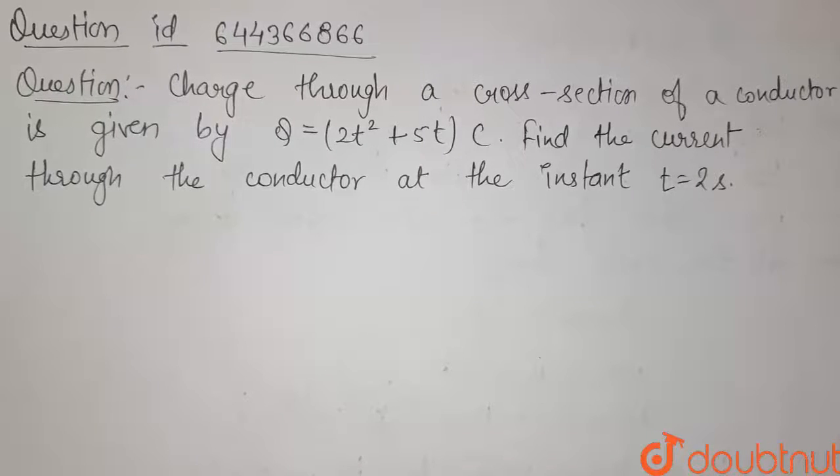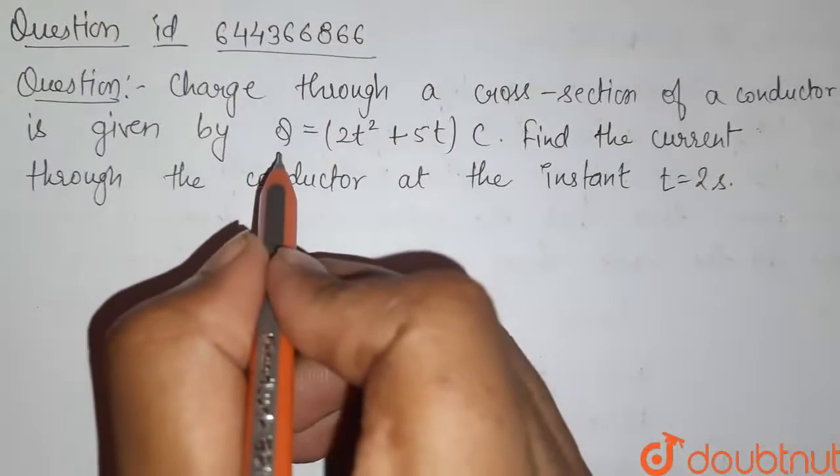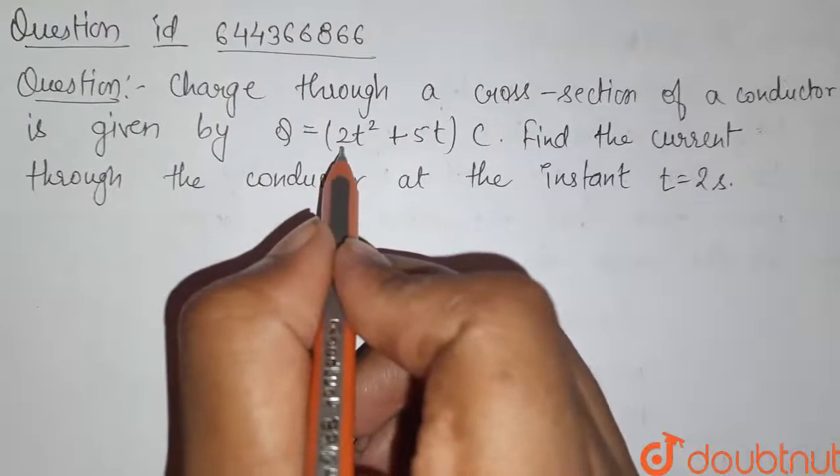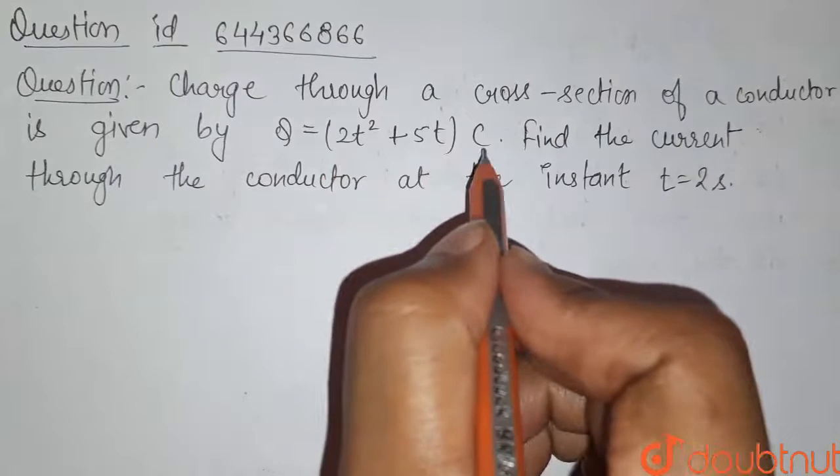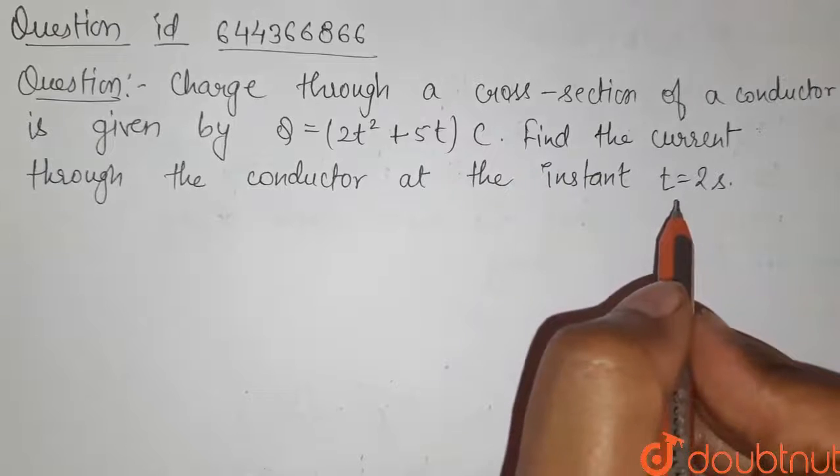Hello students, here is our question. Charge through a cross section of a conductor is given by q equals to 2t square plus 5t Coulomb. Find the current through the conductor at the instant t equals to 2 second.